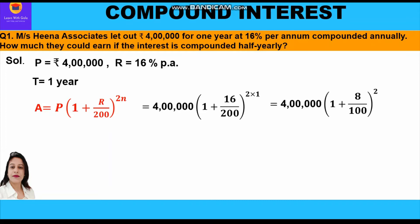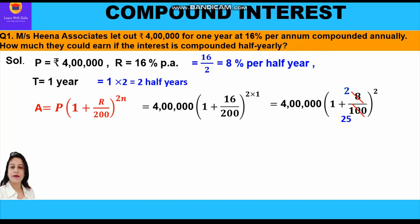This equals 4 lakh × (1 + 8/100)^2. If you observe, r percent was 16 per annum; for half-year we divided by 2 and got 8 percent per half-year. Time period was one year, so in one year we have two half-years, giving us exponent 2. So we have 8/100, which simplifies — dividing 8 and 100 by 4 — to 2/25.